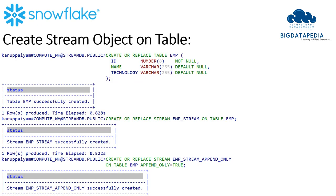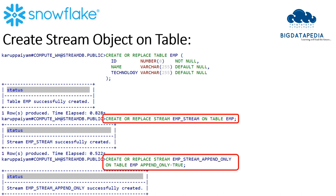Now let me show how to create a stream object in Snowflake. First I create a table named EMP with three columns: ID, name, and technology — ID as numeric and name and technology as varchar. On top of that I create a stream object. The syntax is: CREATE OR REPLACE STREAM stream_name ON TABLE table_name. Additionally, I create another stream object EMP_stream_append_only on the same table with the property APPEND_ONLY = TRUE.